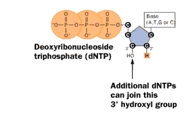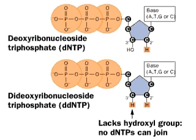A popular method for sequencing DNA uses dideoxyribonucleoside triphosphates. A DNA strand is a polymer of deoxyribonucleotides, each formed from a deoxyribonucleoside triphosphate, or DNTP. If a dideoxyribonucleoside triphosphate — a DDNTP — joins a growing DNA strand, growth stops because there is no 3' hydroxyl group to accept the next monomer.